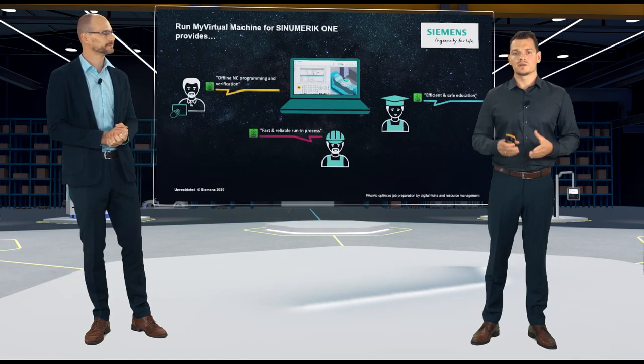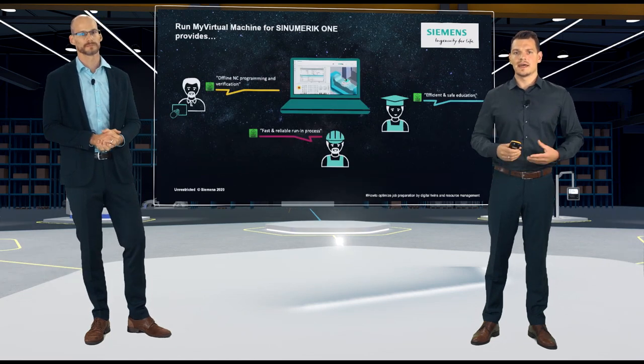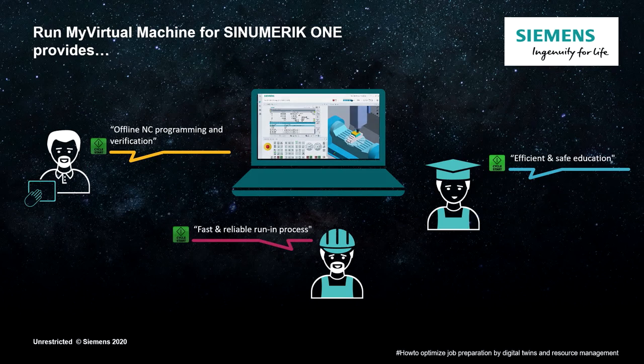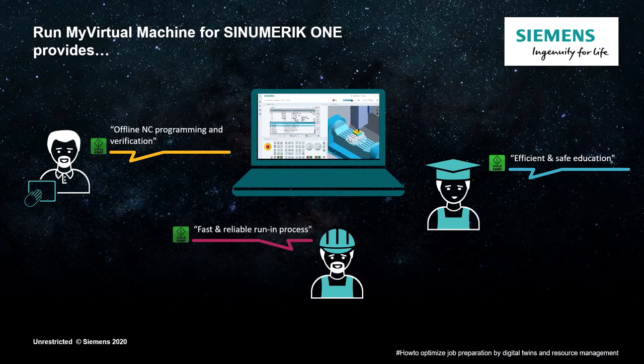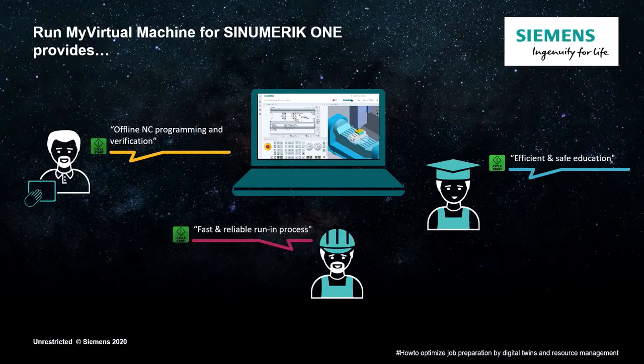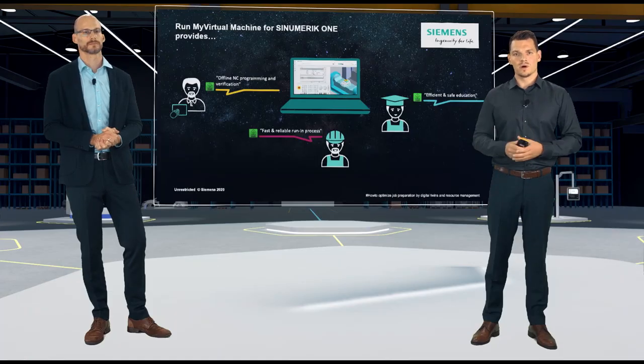So, we have learned that Run My Virtual Machine can help in a number of ways. From offline NC programming and verification without several interactions with the real machine. For a fast and reliable run-in process with shortest machining interruptions. And for efficient and safe education without machine collisions. Use Run My Virtual Machine with Sinumerik One. So, thank you very much.